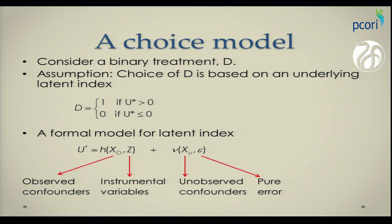A formal model for this latent index could be developed as that U star, which is this underlying latent index, could be a function of many characteristics. Some of the characteristics we observe them and they are confounders. Some of them are instrumental variables which we also observe. But also there could be other confounders that we do not observe and just pure stochastic error. And so this additive formulation of the latent U star is pervasive across all choice models in all literature, both in statistics and econometrics.